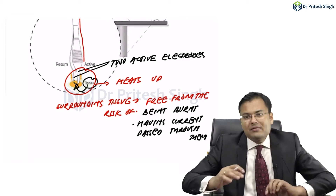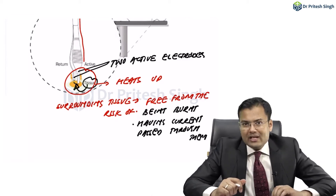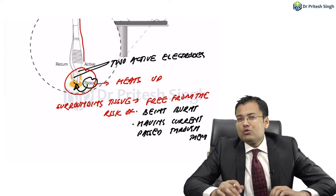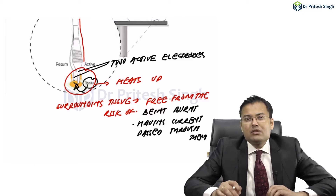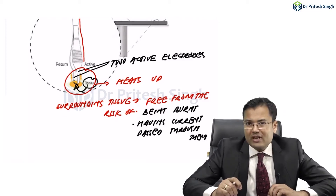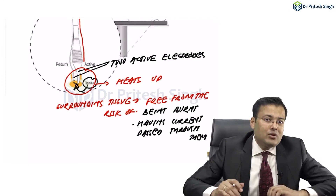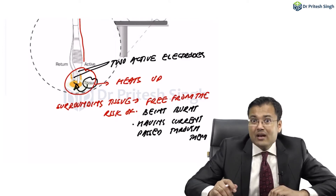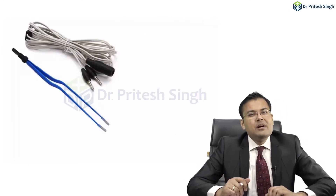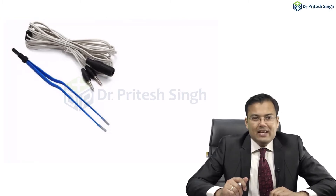Bipolar cautery is frequently used in gynecology. But overall, the most commonly used cautery or diathermy is monopolar cautery. This is what the bipolar diathermy active electrode looks like.